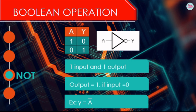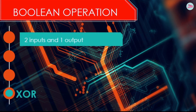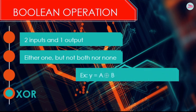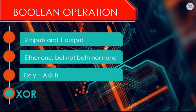And the last Boolean operation that we have to know is the XOR. The XOR has two inputs and one output. The output will be one if either A or B is equal to one but not both. For example, Y equal to A XOR B. The XOR Boolean operation symbol is a plus sign with a circle.